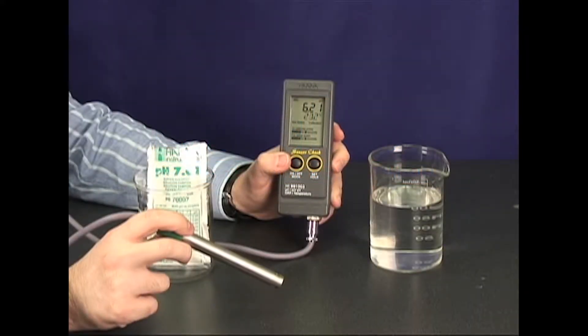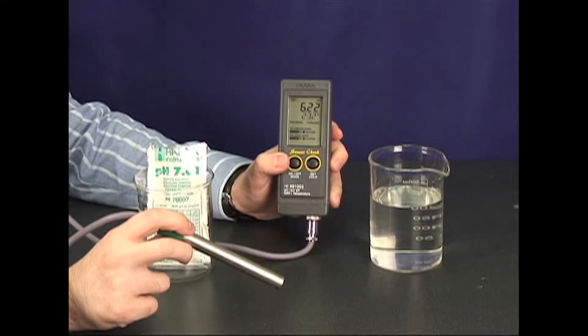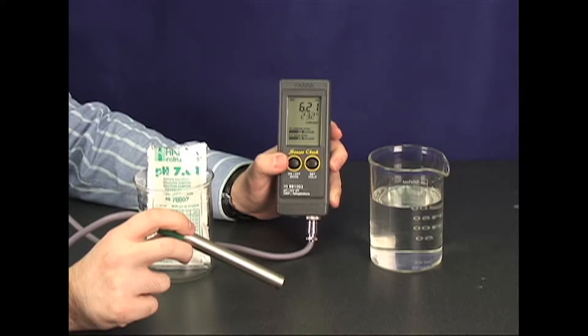The Hanna HI991003N is one of the most accurate and easy to use pH, millivolt, ORP, and temperature meters.